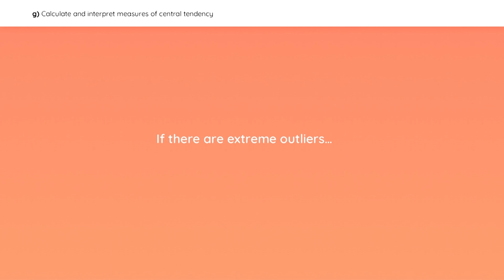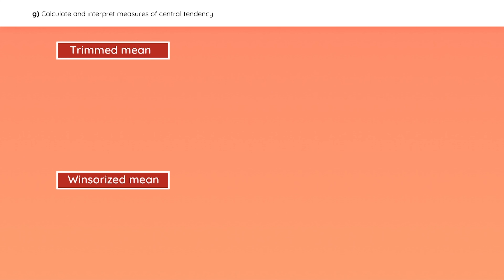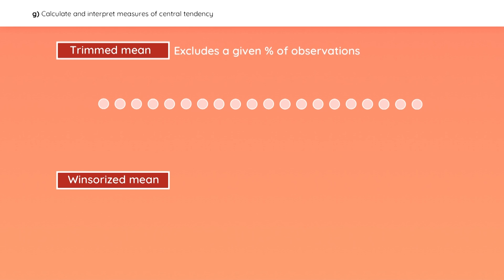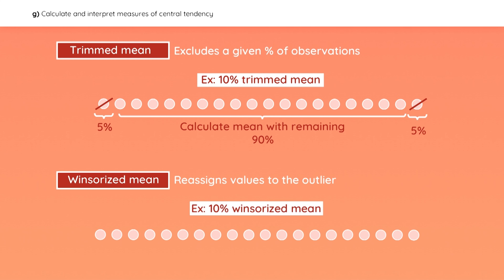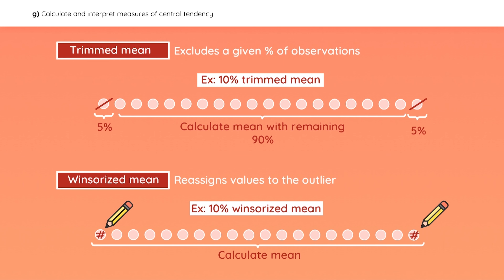If you ever have a data set with extreme outliers, you can use the trimmed mean or the Winsorized mean to exclude extreme observations. The trimmed mean excludes a given percentage of observations — for example, a 10% trimmed mean discards the lowest 5% and highest 5% of observations and calculates the mean of the values that remain. The Winsorized mean reassigns values to the outliers — a 10% Winsorized mean assigns new values to the lowest and highest 5% of observations before calculating the mean of the entire data set.